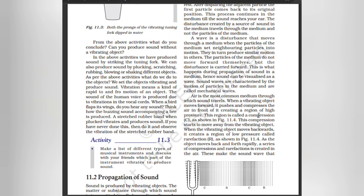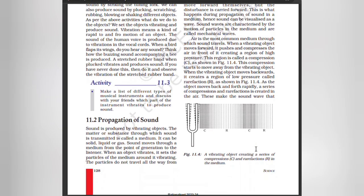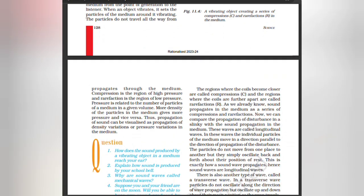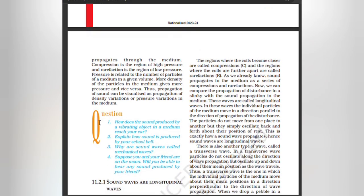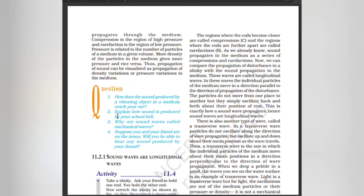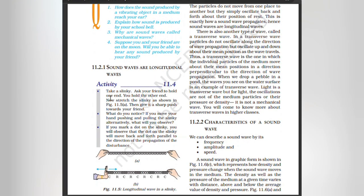Air is the most common medium through which sound travels. When a vibrating object moves forward, it pushes and compresses the air in front of it, creating a region of high pressure called compression. This compression starts to move away from the vibrating object. When the vibrating object moves backwards, it creates a region of low pressure called rarefaction. As the object moves back and forth rapidly, a series of compressions and rarefactions is created in the air, making the sound wave that propagates through the medium. Compression is the region of high pressure and rarefaction is the region of low pressure. Pressure is related to the number of particles of a medium in a given volume. Thus, propagation of sound can be visualized as propagation of density variations or pressure variations in the medium. Sound waves are longitudinal waves.